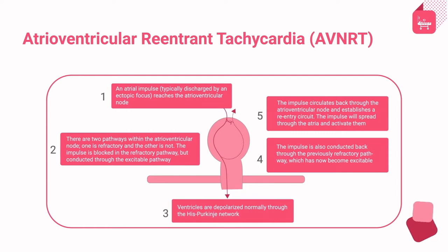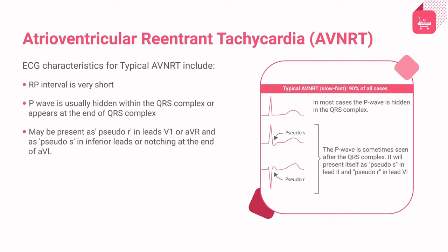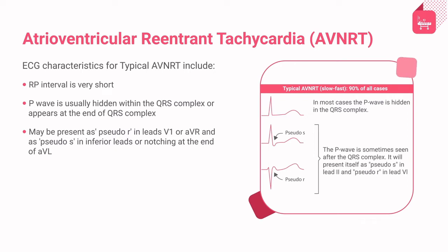AVNRT is a reentrant tachycardia that involves the AV node. Retrograde conduction typically occurs along the fast pathway; as a result, the atria are reactivated during or shortly after ventricular activation. During typical AVNRT, the P wave falls on the ST segment or within the terminal part of the QRS complex. In most cases the VA interval is less than 70 milliseconds. Based on the contribution of the fast and slow pathways, AVNRT is classified into typical and atypical forms.